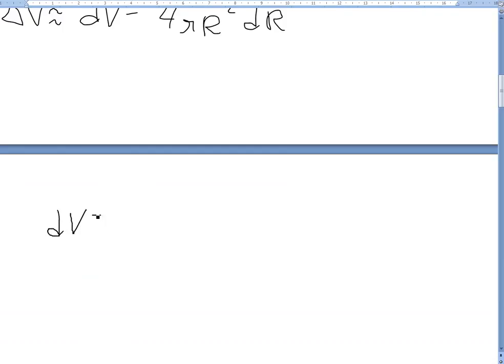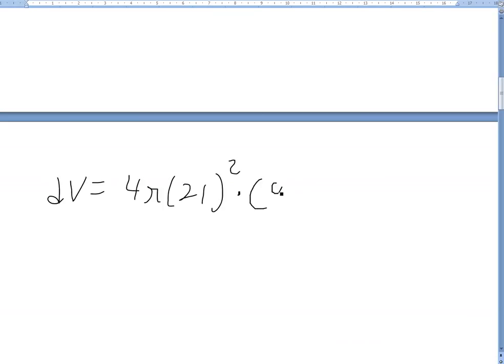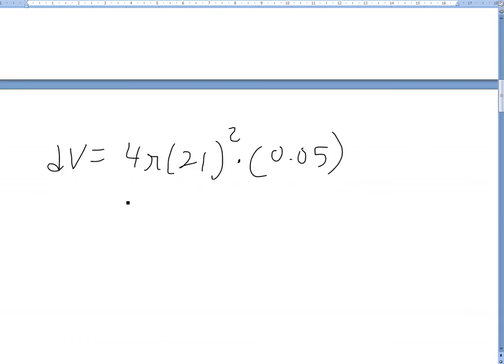We can just now plug it in. We'll get dV equals 4π times 21 centimeters squared times 0.05 centimeters. So if you plug this in the calculator we'll get approximately 277 centimeters cubed. This is going to be centimeter squared times centimeters, centimeters cubed.